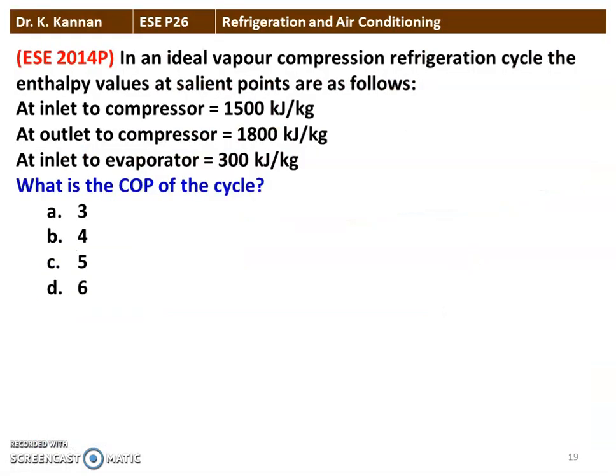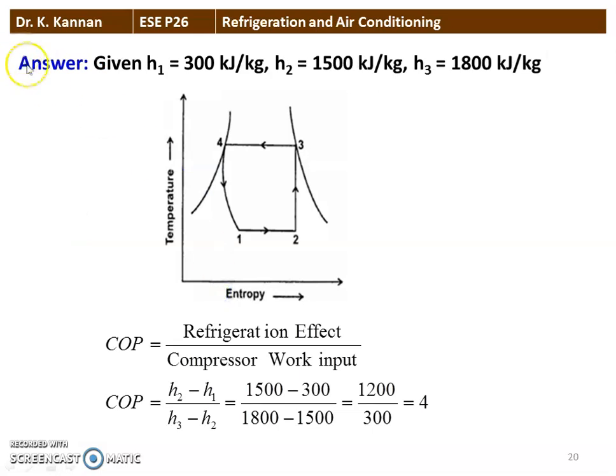The first question is from the 2014 question paper. In an ideal vapor compression refrigeration cycle, the enthalpy values at salient points are as follows: at the inlet to the compressor, 1500 kJ/kg; at the outlet of the compressor, 1800 kJ/kg; at the inlet to the evaporator, 300 kJ/kg. What is the COP of the cycle? The correct answer is 4.